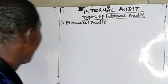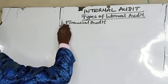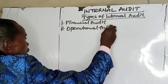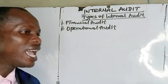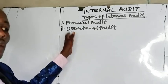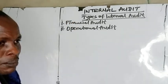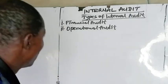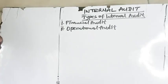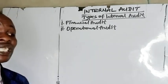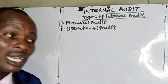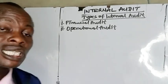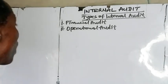The second type is operational audits. Operational audits involve the examination of the internal controls of the entity to establish whether the controls that have been put in place by management are operating effectively.